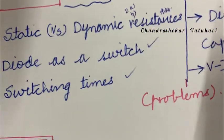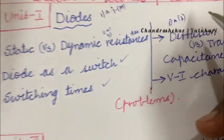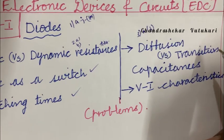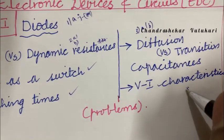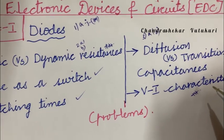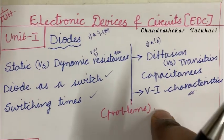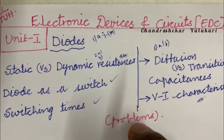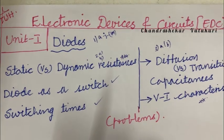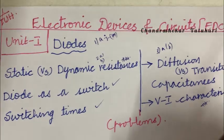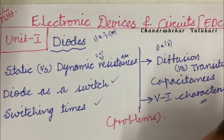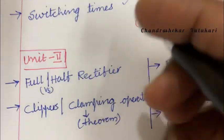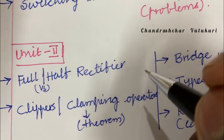Diode as a switch is also a key topic — both as a short question and a long question. Switching times may also be a short question. For question 3A and 3B, diffusion versus transition capacitance along with its neat sketch may appear. Circuit diagrams should be worked out very neatly, and VI characteristics need to be covered thoroughly. Work out each and every parameter without skipping, along with the related problems. Use two sets of pens and draw neat diagrams only in pencil.